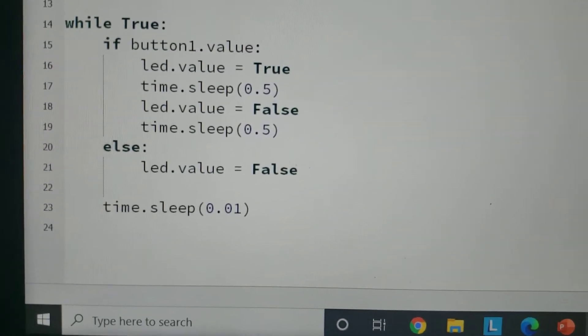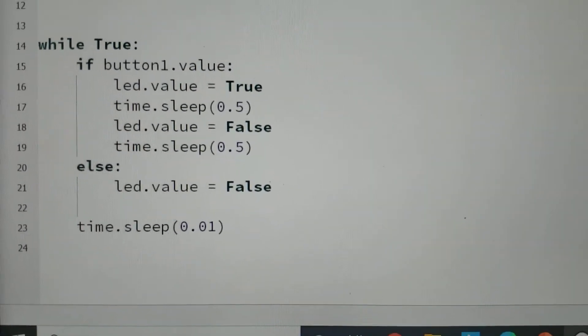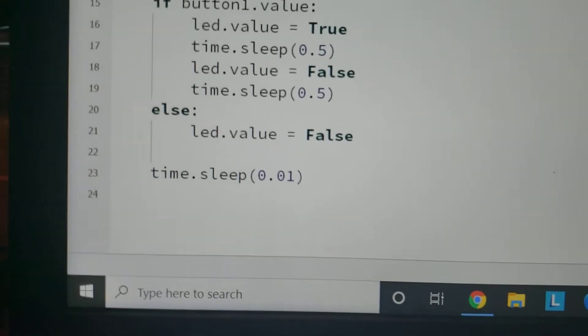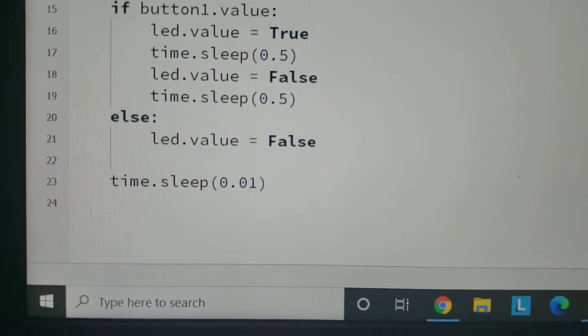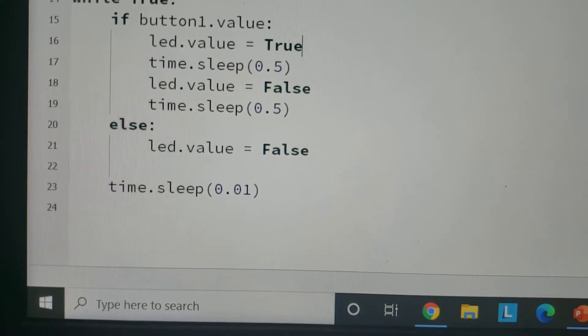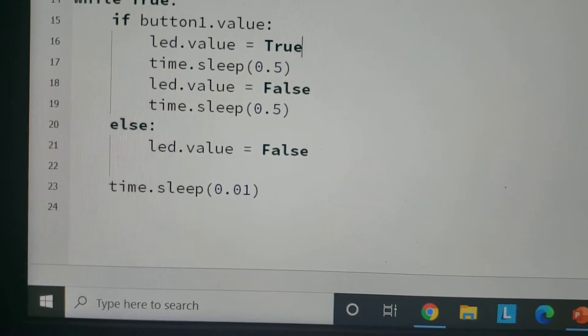The else statement is when the button is false, the LED value will be false, and we've got a small debounce right here, which is time.sleep for a tenth of a second. Or I'm sorry, a hundredth of a second.